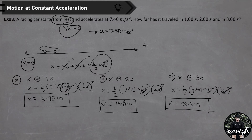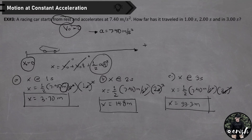This example illustrates a key feature of accelerated motion: position does not change uniformly with time when an object accelerates. The distance traveled in the first 2 seconds is 4 times the distance in the first second, and the distance in the first 3 seconds is 9 times the distance in the first second. This behavior results directly from the fact that position depends on T squared when acceleration is non-zero. This concludes example number 3.